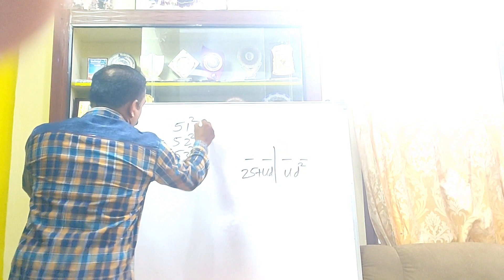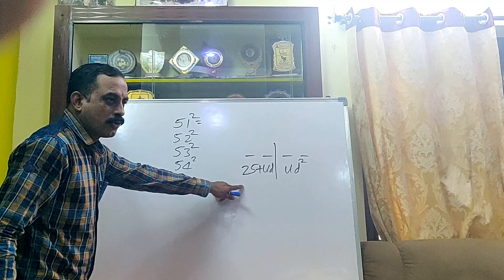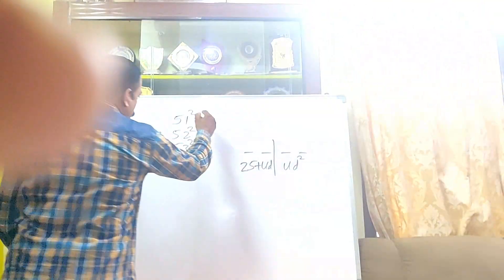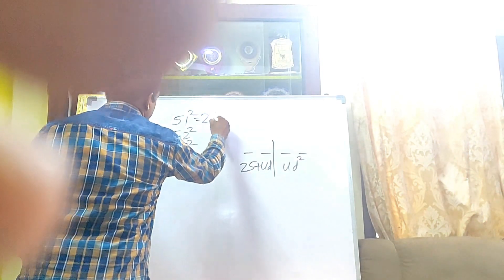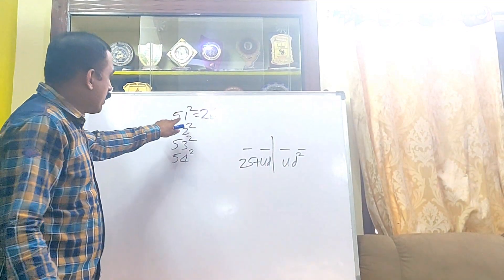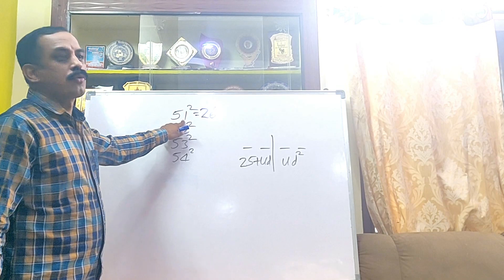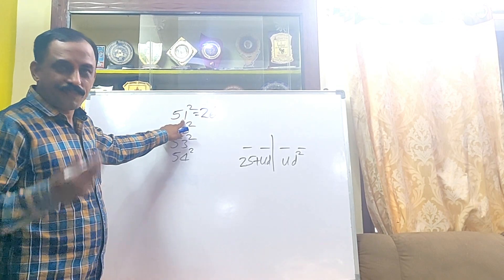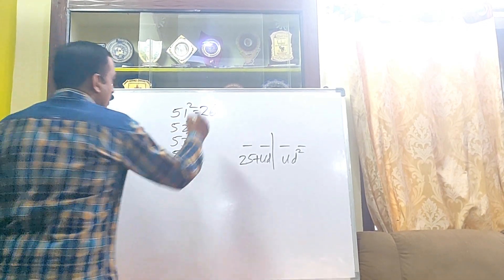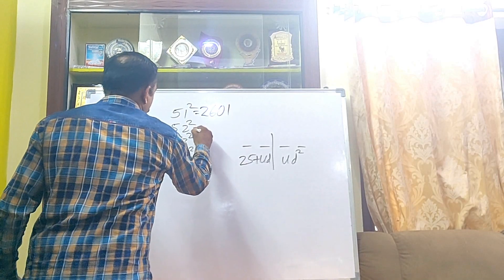For example: 51 squared. What is the first part? 25 plus the unit digit 1 equals 26. The second part is the unit digit squared: 1 squared is 1. But 1 is not a 2-digit number, so write it as 01. Therefore, 51 squared is 2601.